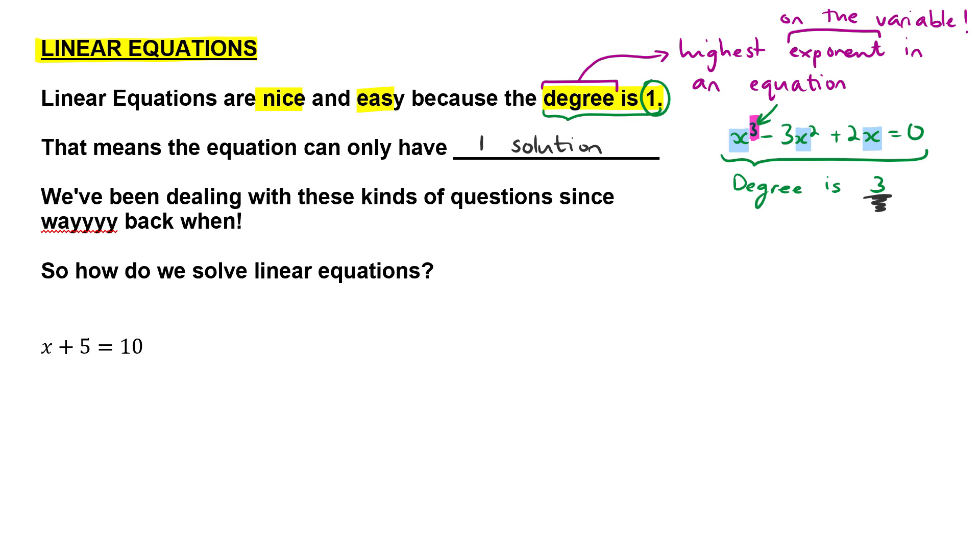If I gave you the equation over here of x plus 5 equals 10, what you'd suggest to me is, well, I'm going to take this 5 over here and move it over and so my answer would therefore be x is 10 minus 5, therefore x is 5.